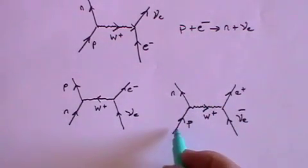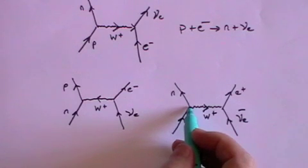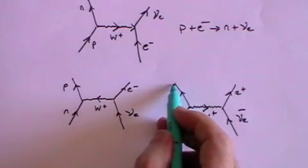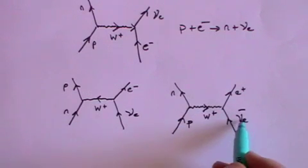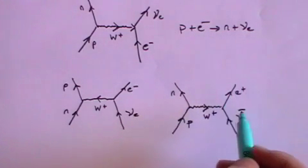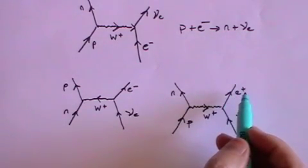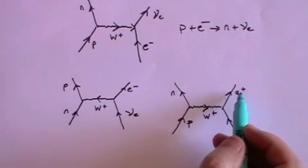Because the W plus needs to carry the positive charge away from the proton so that it now becomes a neutrally charged neutron. It will join up with the neutrally charged anti-neutrino to produce a positively charged electron, which is, of course, an anti-electron.